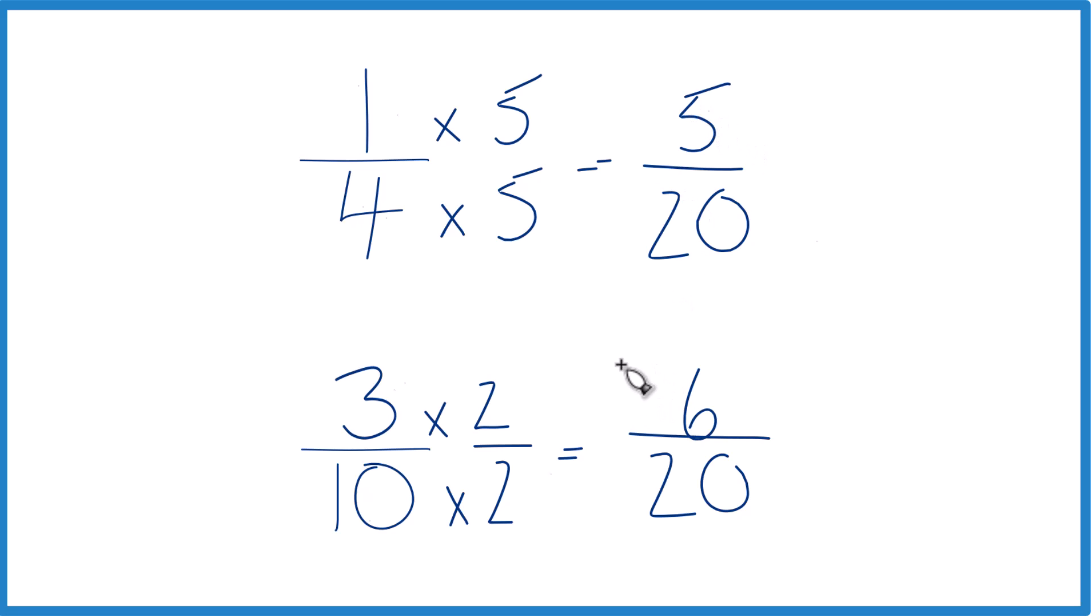Six is greater than five, so six-twentieths, that's greater than five-twentieths by one-twentieth. Not a lot, but it's still greater. And since these two are equivalent, these two are equivalent here, three-tenths, that's larger than one-fourth.